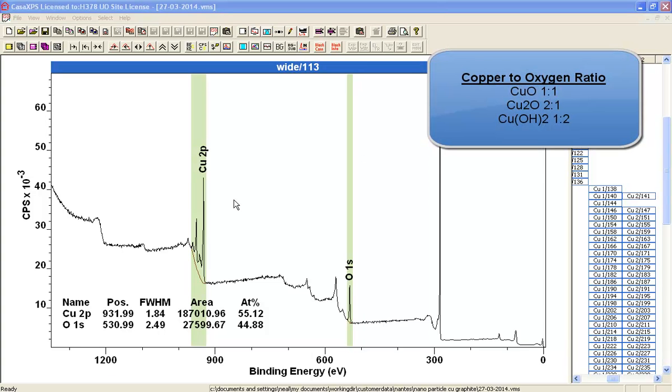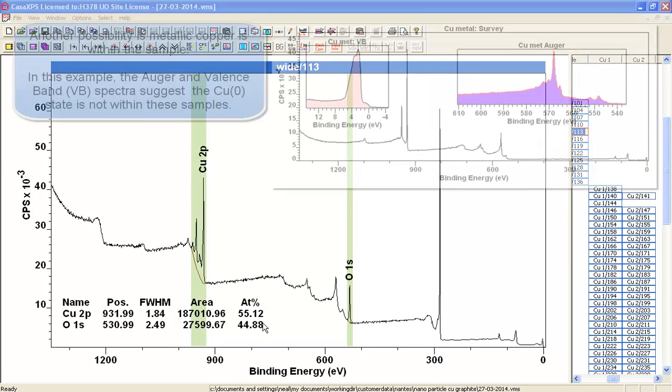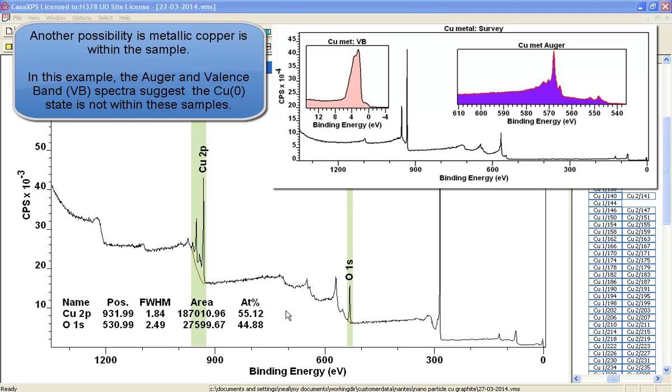When looking at copper oxide, one of the tests you could perform is to look at the ratio of the copper 2p against the oxygen 1s. And if properly quantified using relative sensitivity factors, transmission, etc., you might expect the atomic concentration to give an indication of the amount of each substance. In this case, we're looking at a material where it's slightly favoring the copper, but roughly about the same.